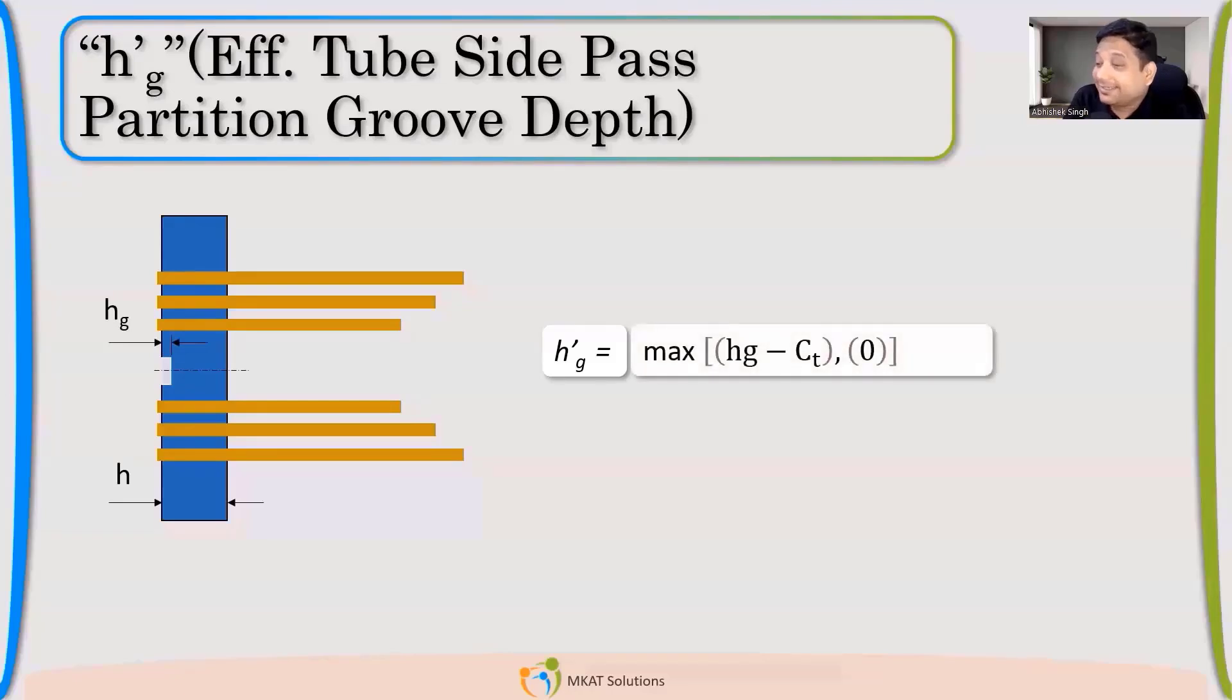H'g is the calculated value. Actually, it is the final groove depth, because if there is corrosion allowance, which you can see by the black color, your H'g will reduce. Groove depth will reduce because the corrosion will go away after some time. So we are trying to calculate for end of life. At that time your corrosion will not be there. So your H'g, which is the groove depth finally, will be Hg minus CT. CT is nothing but corrosion allowance.